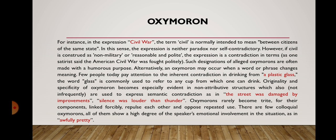For instance, in the expression 'civil war,' the term 'civil' is normally intended to mean 'between citizens of the same state.' In this sense, the expression is neither a paradox nor self-contradictory. However, if 'civil' is construed as 'non-military' or 'reasonable and polite,' the expression is a contradiction in terms. As one satirist said, 'the American civil war was fought politely.' Such designations of alleged oxymorons are often made with a humorous purpose. Alternatively, an oxymoron may occur when a word or phrase changes meaning — few people today pay attention to the inherent contradiction in drinking from a 'plastic glass.'